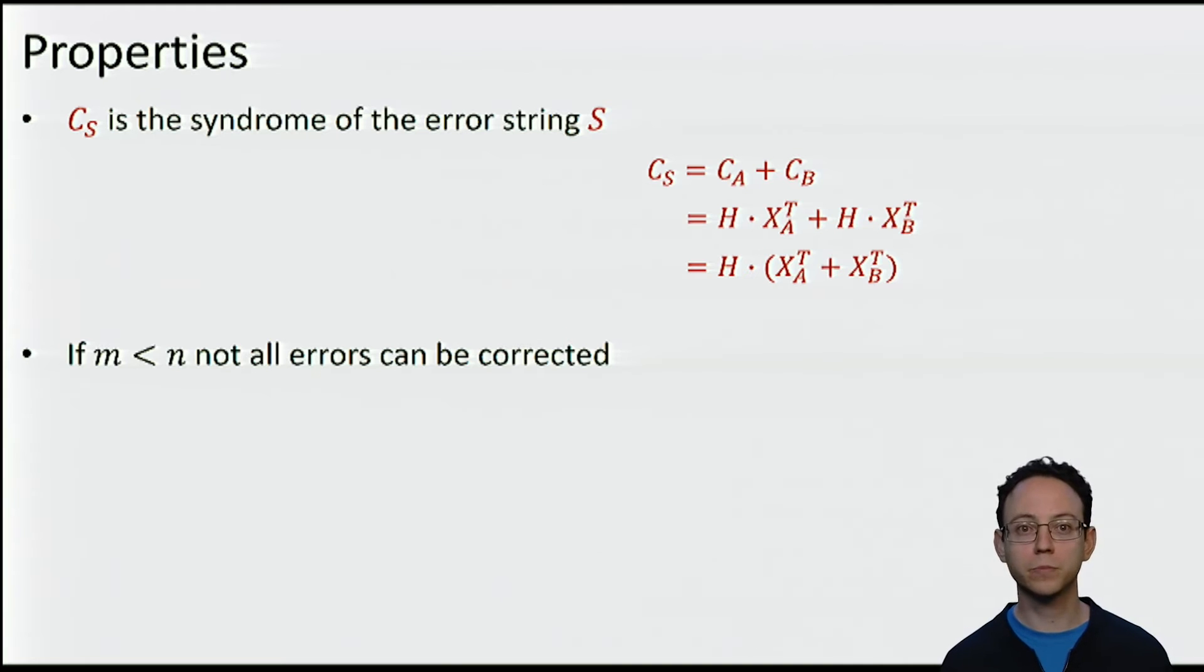Another trivial but relevant property of the scheme is that as soon as the length of the string that Alice sends Bob is smaller than the length of the string of Alice, not all errors can be corrected. In order to see this, recall that XA hat is XB plus S hat. But S hat is a function of CS, the syndrome of S. Hence, even if the estimator function outputs a different value for each syndrome, we have 2 to the m different outputs while there are 2 to the n different error strings. In other words, unless m equals n, it is not possible to correct all errors.